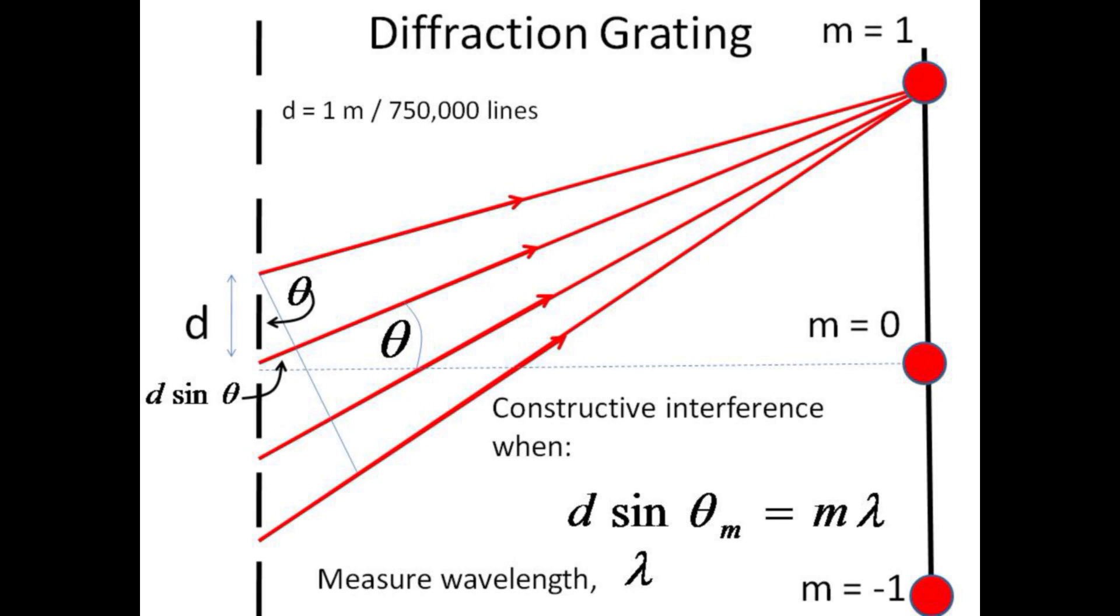Constructive interference occurs when each path to the screen differs by one full wavelength from neighboring paths. Mathematically, this condition is met when d sin θ equals m times λ, where m is an integer. Since the spacing d is small, one 750 thousandth of a meter, the angles for constructive interference are quite large.